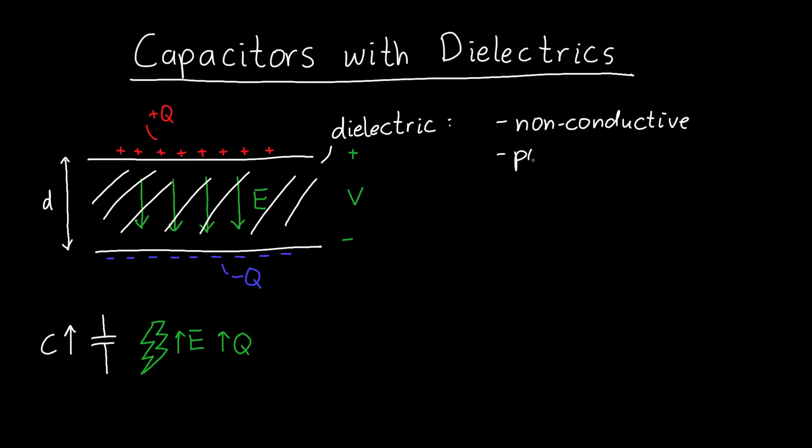Dielectrics are also what's called polarizable, and this means that most materials that I know of are made out of atoms, and atoms have a positively charged nucleus surrounded by negatively charged electrons.